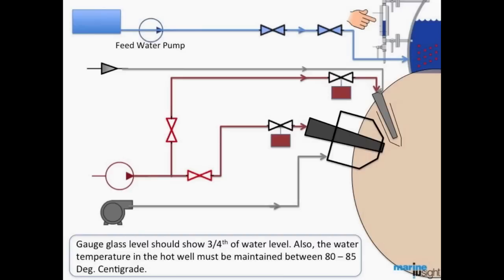Check the water level in the boiler drum through the gauge glass. The gauge glass level should show three-fourths of the water level. Also the water temperature in the hot well must be maintained between 80 to 85 degrees centigrade.